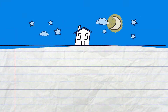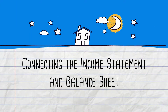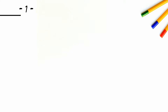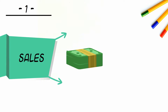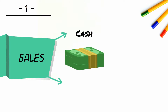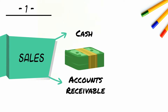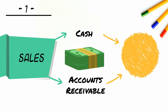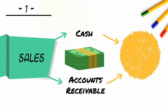Connecting the Income Statement and Balance Sheet. Income statements begin with sales revenue. When a company sells its products, it earns cash. If the sales are made on credit terms, accounts receivables are generated. Both cash and receivables are recorded as assets in the balance sheet.